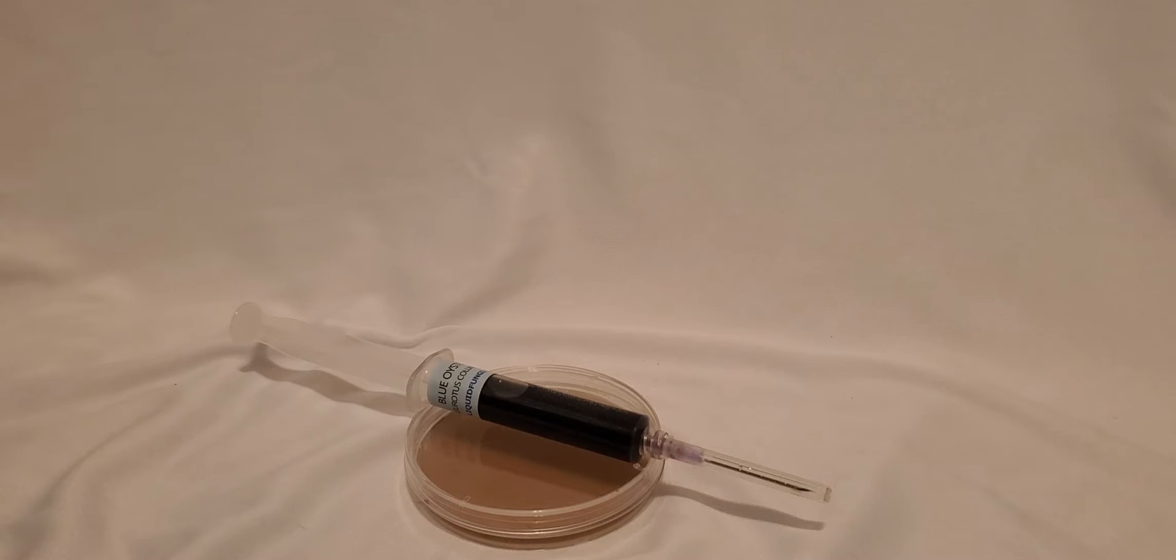Sometimes when you want to disperse a small amount of liquid culture or spore solution onto a petri dish in order to isolate it or maintain it, squeezing or pressing the plunger of the syringe can cause it to squirt everywhere or squirt more than you intended.